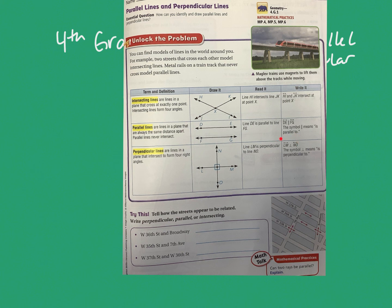To write it, it's much shorter: line LM, then this symbol meaning 'perpendicular to,' then line NO, because they meet at a perpendicular point. So those are the vocabulary terms for this lesson.